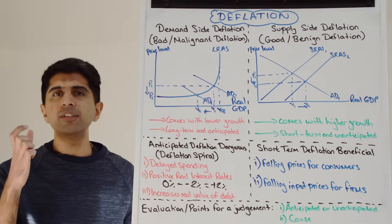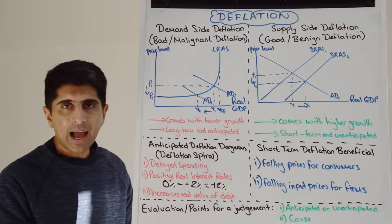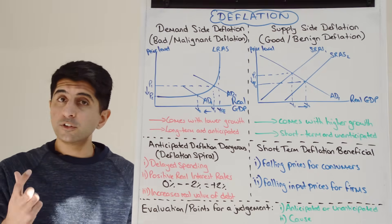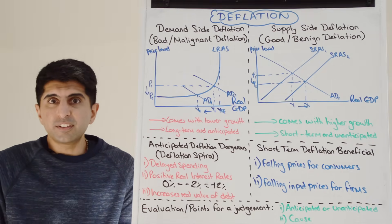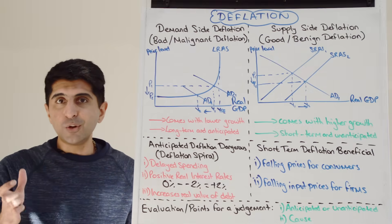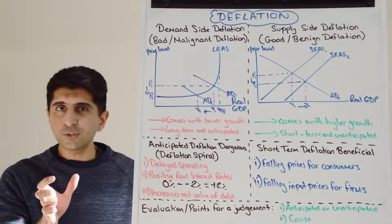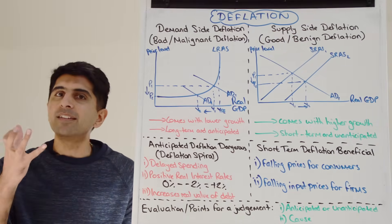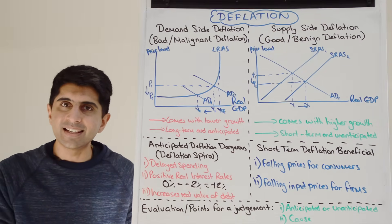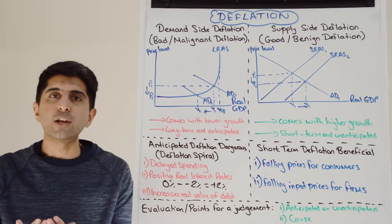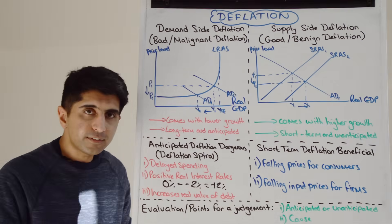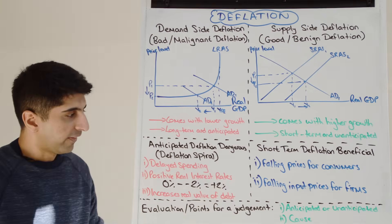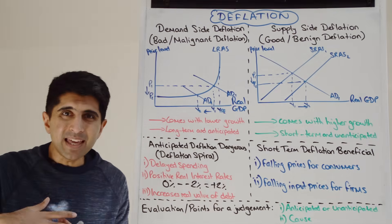Debt is always a fixed value. If a household has a mortgage of £200,000, deflation doesn't change that value — you still have to pay that amount off. But if your income is falling, it makes it harder to service that debt. That's what we mean by the real value of debt rising. It's harder to service debt for households, and for businesses if profits are falling and they've got debt.